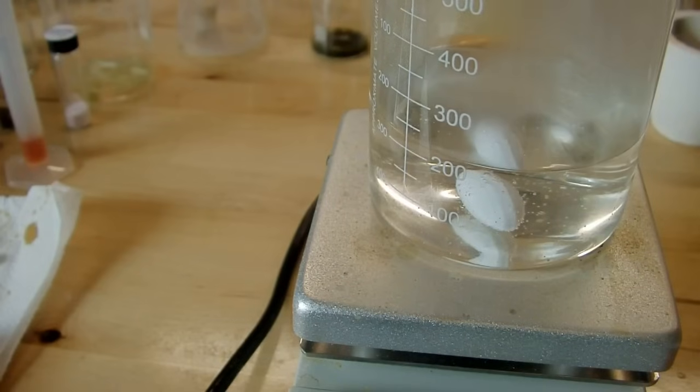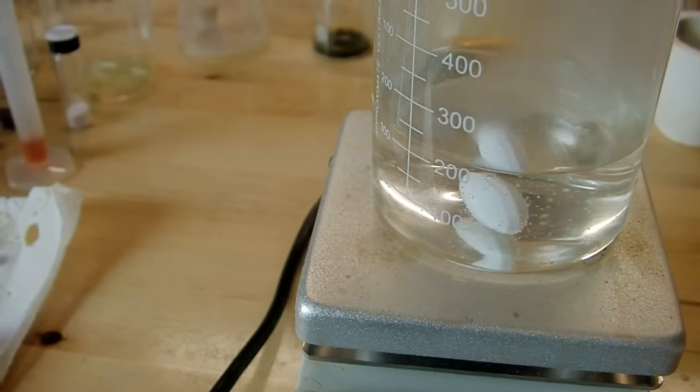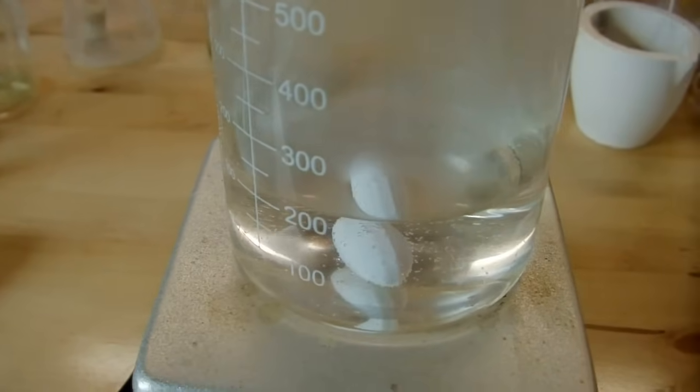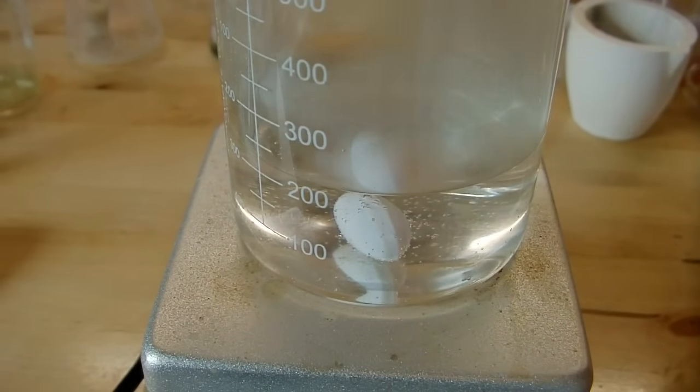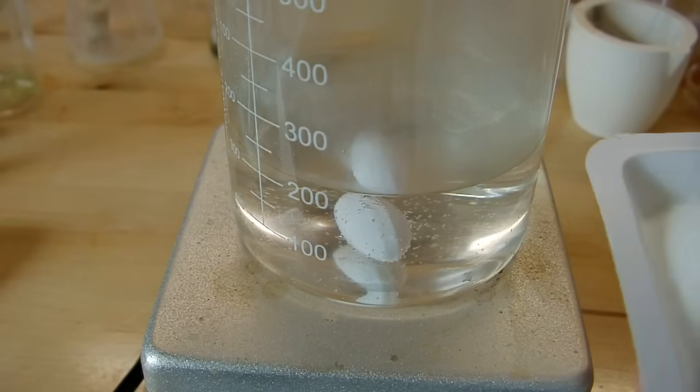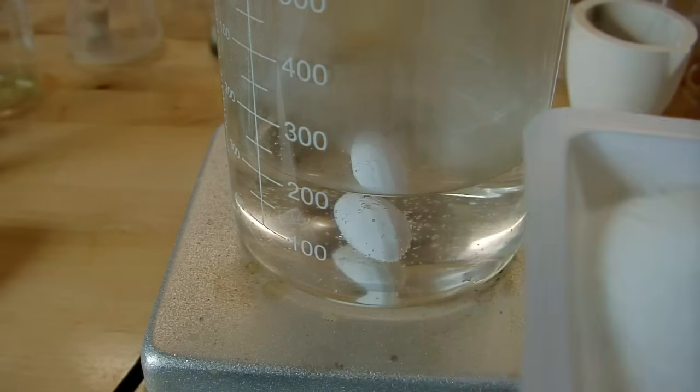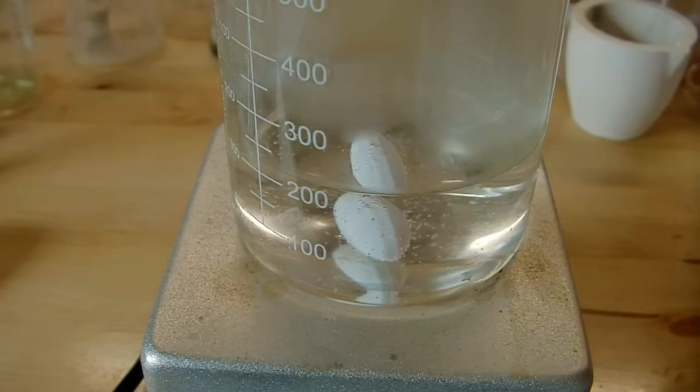All those other things are going to be impurities. The majority of which is going to be the potassium chloride, so what we're going to do is take some of that and dissolve it into a hot solution.